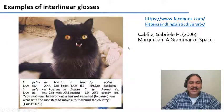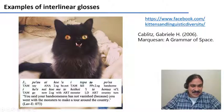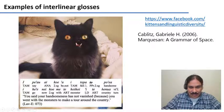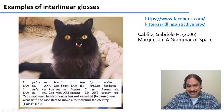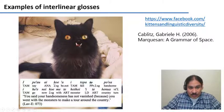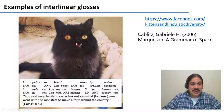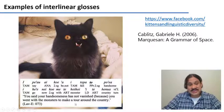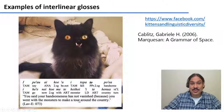This is another example from the language Marquesan from the South Pacific. First, you have the words in Marquesan — for example, 'itopato poeia'; 'poeia' means handsome. Second, you have the meaning of the morphemes in each of the words. And third, you have the translation of all of the sentences into English: 'You said your handsomeness has not vanished because you went with the monsters to make a tour around the country.'